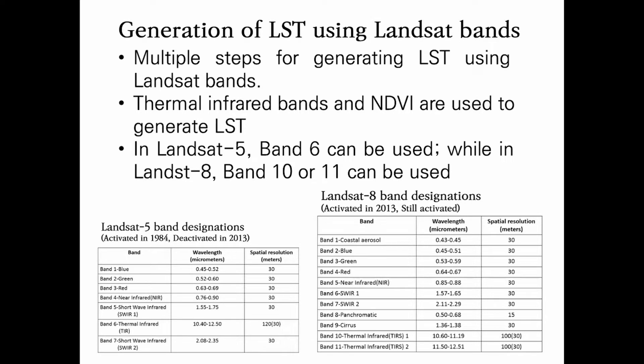I will explain the generation of LST using Landsat band. There are multiple steps for generating LST using Landsat band. First of all, the thermal infrared band and NDVI, which means the vegetation index, are used to generate LST. The left table represents the Landsat 5 band designations, and the right table represents the Landsat 8 band designations. In the Landsat 5 band designation, Band 6 is the thermal infrared band. And in the Landsat 8 band designation, Band 10 and Band 11 are the thermal infrared bands. Hence, Landsat bands can be used to generate LST.